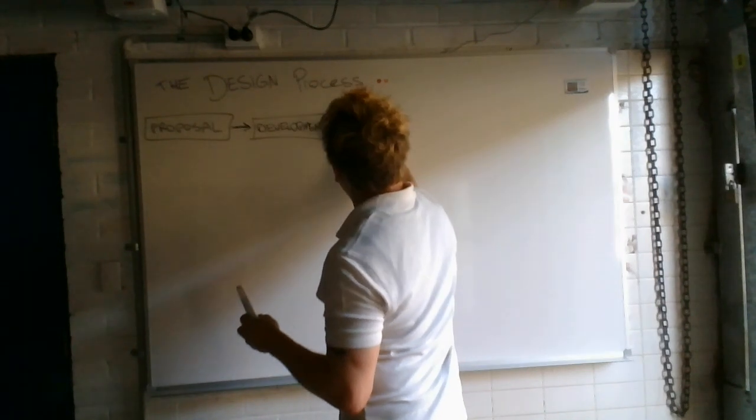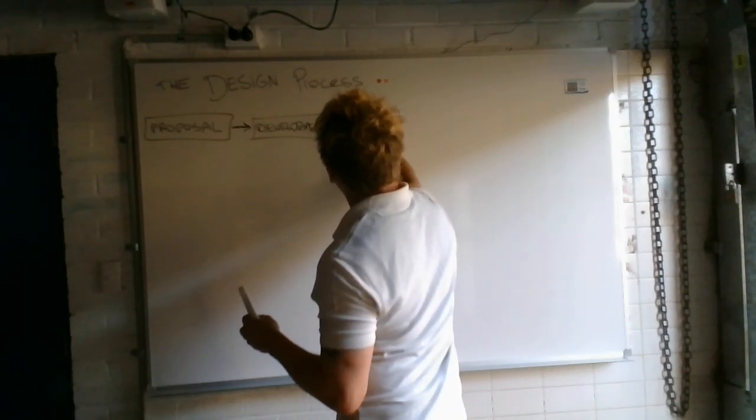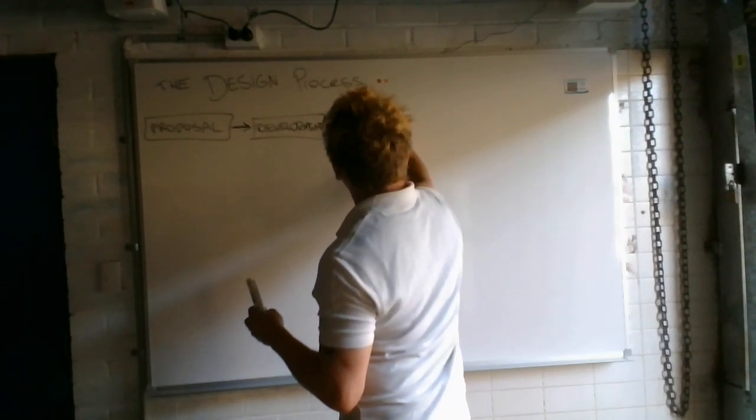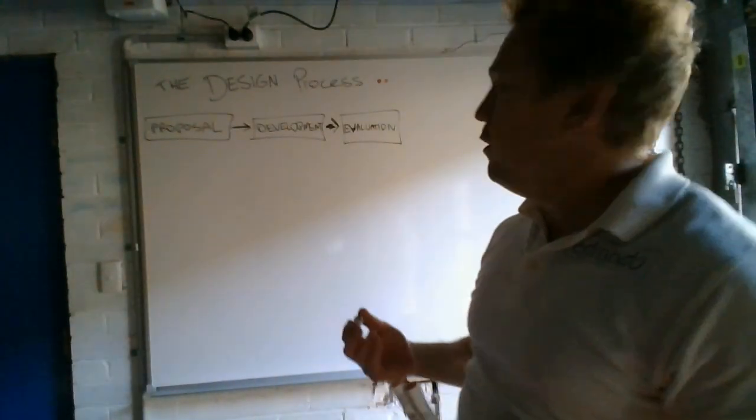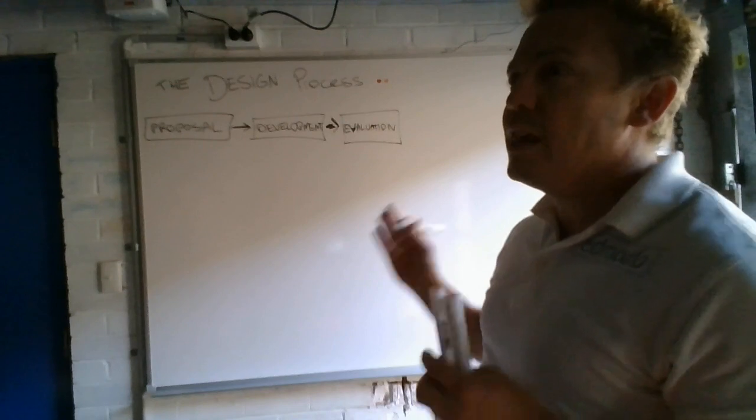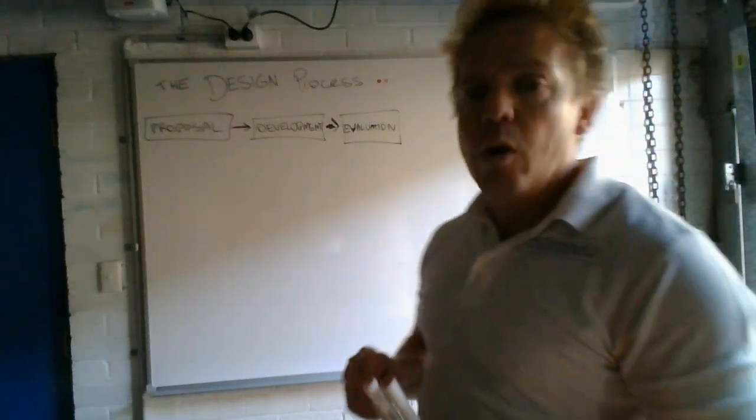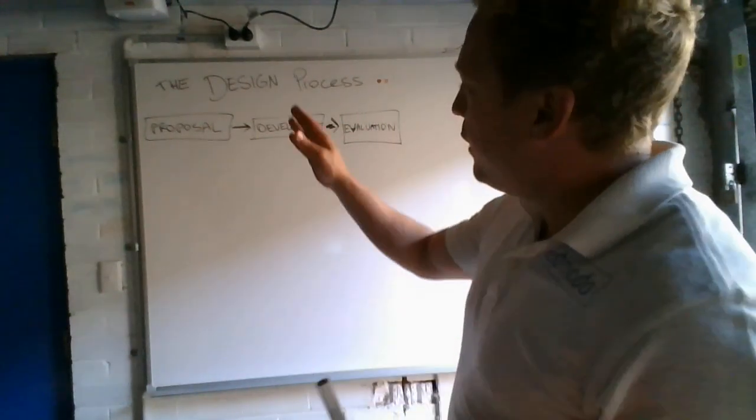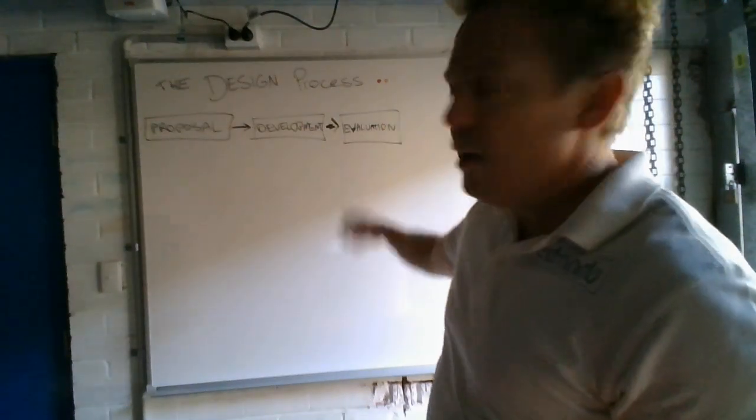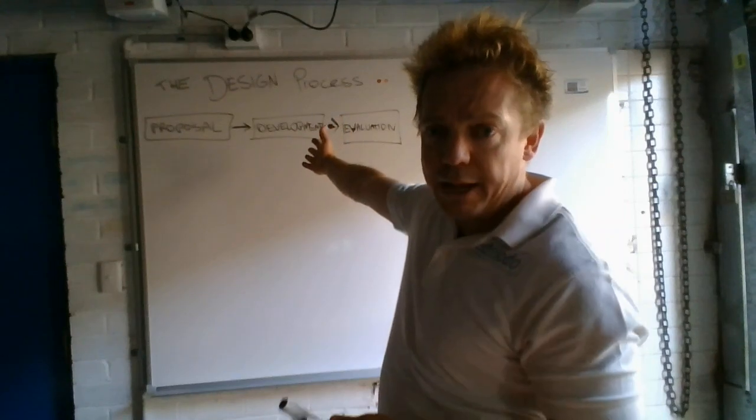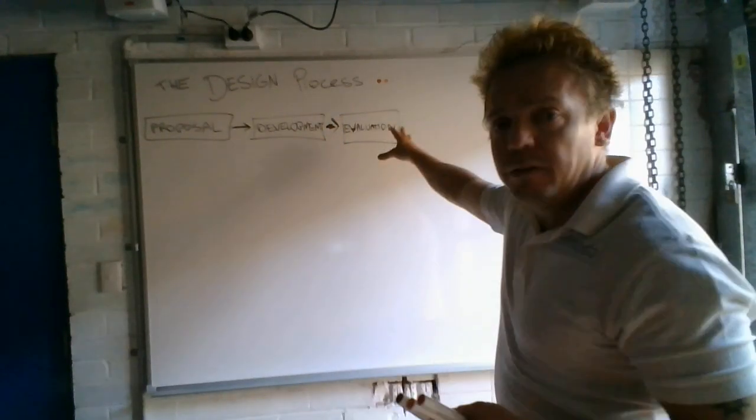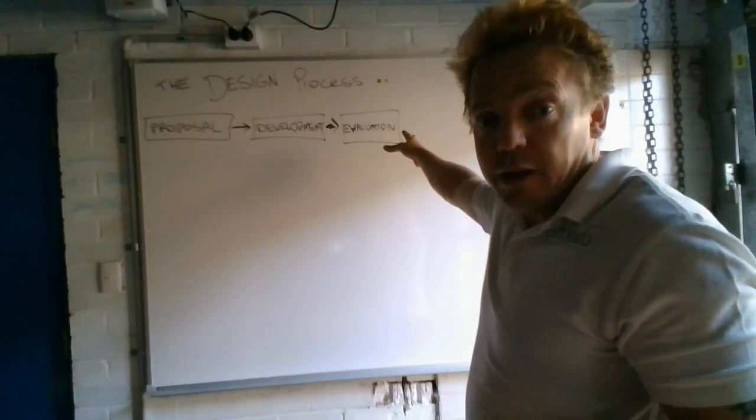And this one, even though we put it at the end, is your evaluation. When you look at your finished project and you go, yep, this is exactly how I want it to be. Awesome. Or it's where you might make some changes. Now, that's in three steps. Proposal, plan what you're going to do. Development is where you're making it happen. Your evaluation is what you do to see how good it is.